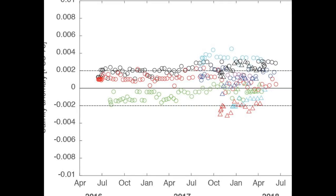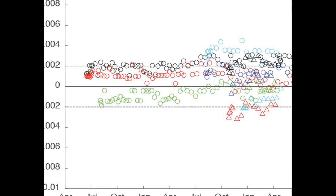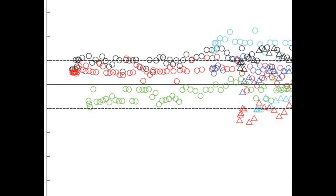The Argo program has been implemented and sustained for nearly two decades, providing continuous observations of ocean temperature and salinity versus pressure from the sea surface to 2,000 meters deep.